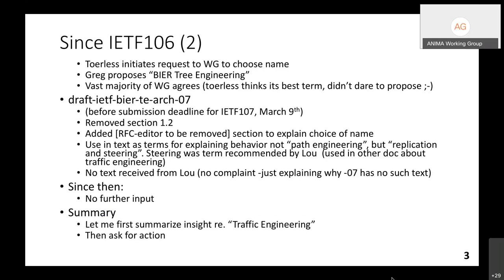Since we couldn't simply come up with a name that would make everybody happy, we initiated a choice for the names. Greg proposed to call it 'BIER tree engineering,' which almost everybody in the working group chimed in and supported. I didn't really oppose it because it also says TE, and I really think technically it's the best term — that's effectively what this protocol does: it engineers trees. It doesn't itself care for resource allocation along the tree; it just does the steering for a tree. That's now in the current ARCH-07 submitted before the IETF deadline.